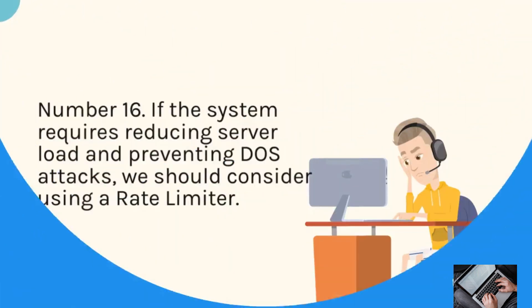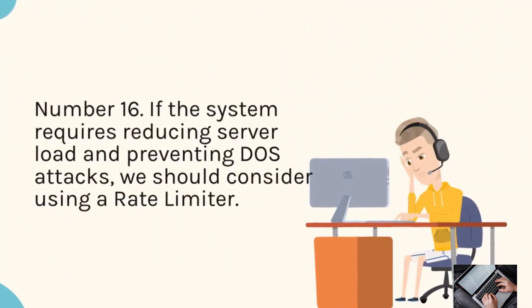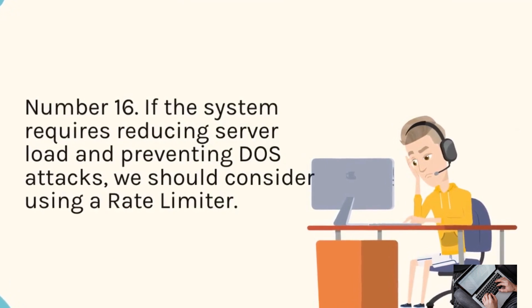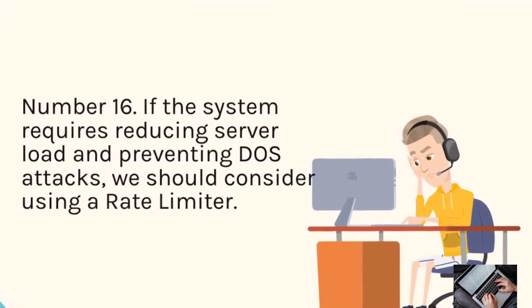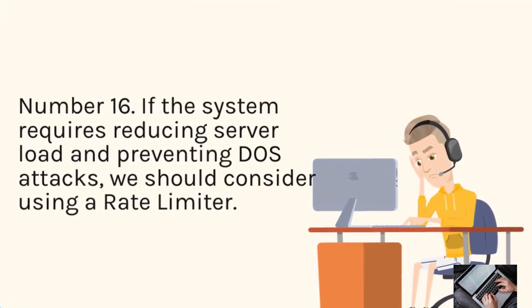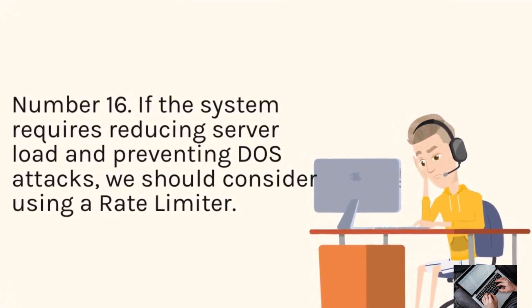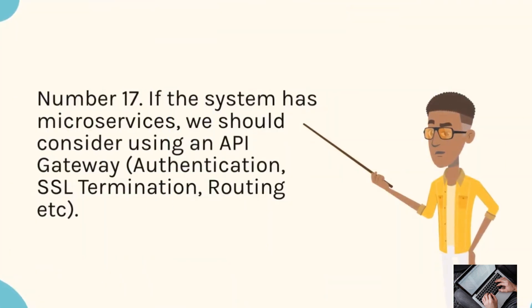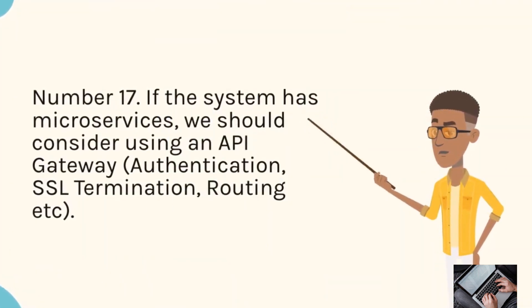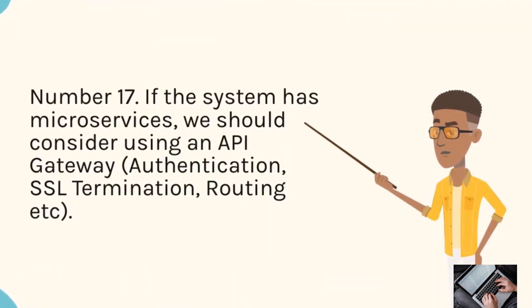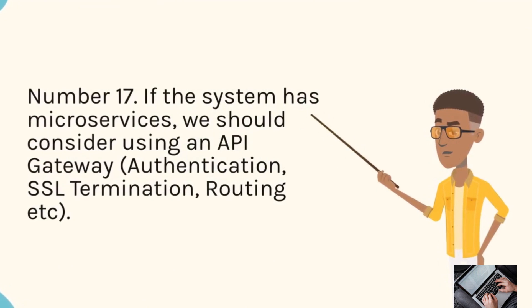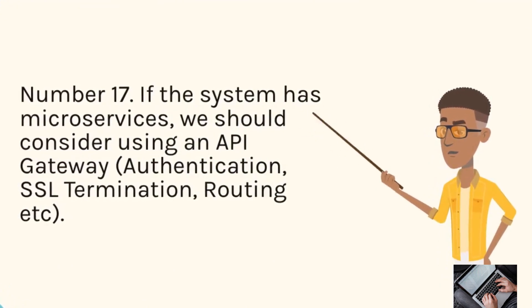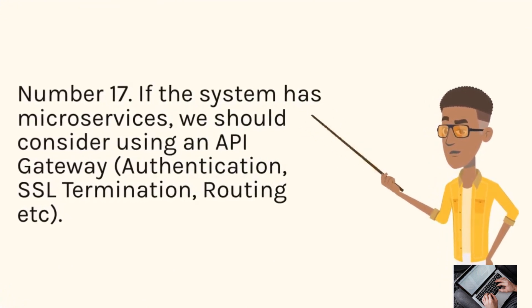Number 16: If the system requires reducing server load and preventing DOS attacks, we should consider using a rate limiter. Number 17: If the system has microservices, we should consider using an API gateway, authentication, SSL termination, routing, etc.